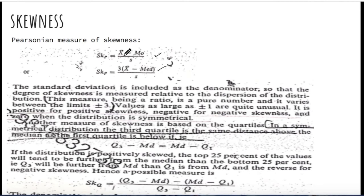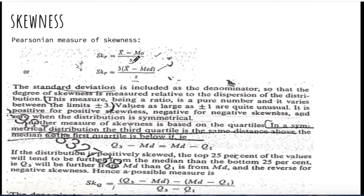The formula is x-bar (the mean) minus mode, divided by small s, which is the standard deviation of the distribution. We discussed standard deviation previously under dispersion — we always measure skewness with respect to dispersion because we are dividing by standard deviation. The second formula uses three times (x-bar minus median), and these two formulas are actually the same because of the relationship between mean, mode, and median.